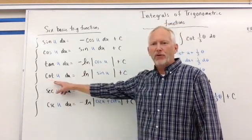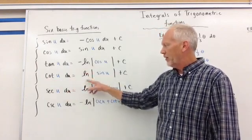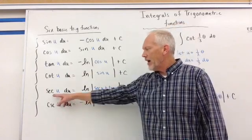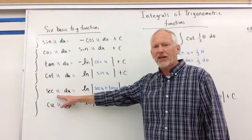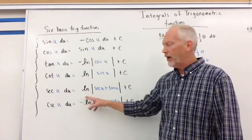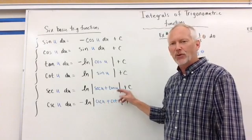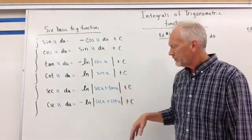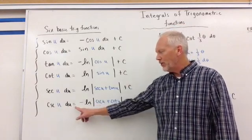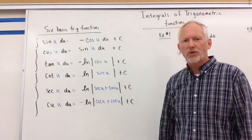The antiderivative of cotangent of U, dU, is equal to ln, positive ln now, of the sine of U plus C. And the antiderivative of secant of U, dU, is equal to the natural log, or ln, of the absolute value of secant U plus tangent U, absolute value plus C. And the antiderivative of cosecant of U, dU, is equal to the negative ln of cosecant U plus cotangent U.